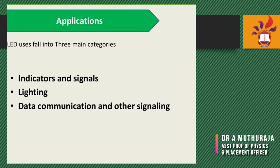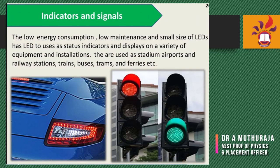LED users fall into three main categories: indicator purposes, signals and lighting, and data communication and other signaling. The motor industry uses LEDs for cars, bikes, and everywhere for indicator purposes because LED efficiency is very high and power consumption is very low. This applies to both two-wheelers and four-wheelers, as well as traffic signals.